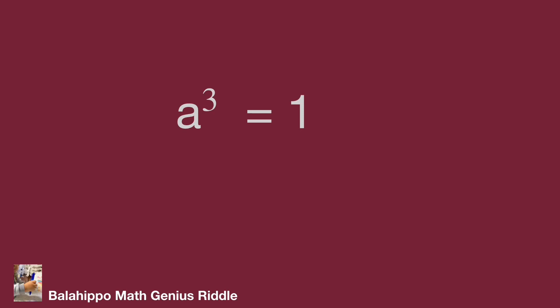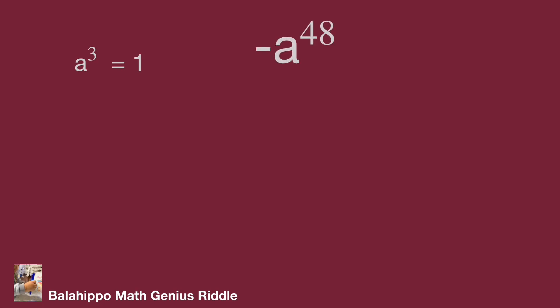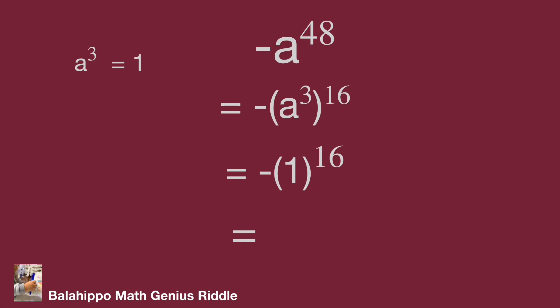Now back to our question. Minus a power of 48 equals minus the quantity a cubed to the power of 16. Substitute a cubed by one: it becomes minus one to the power of 16, which equals minus one. That's the answer. Hope you enjoyed the video. Thank you.